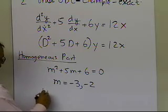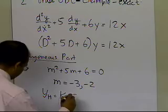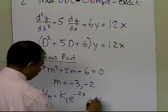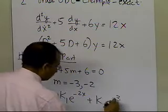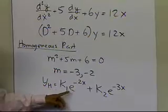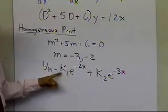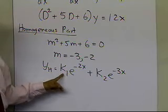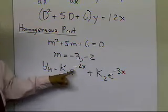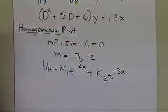What that implies is that the homogeneous part of the solution is k1 e to the power minus 2x, plus k2 e to the power minus 3x. That's the homogeneous part of the solution: k1 e to the power minus 2x, plus k2 e to the power minus 3x.